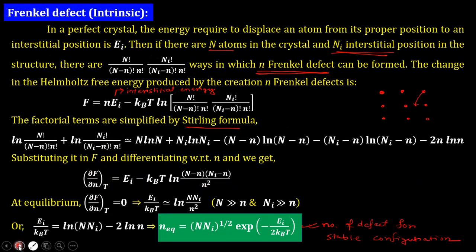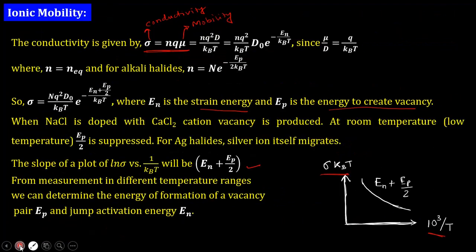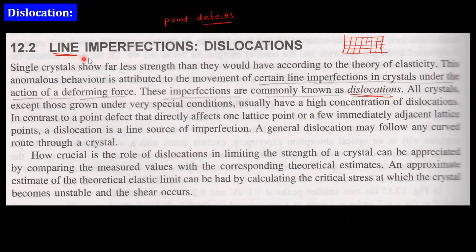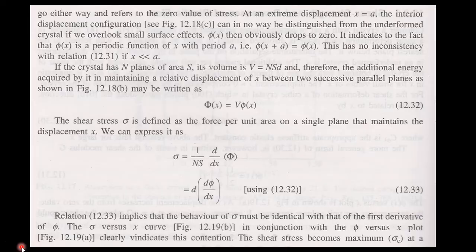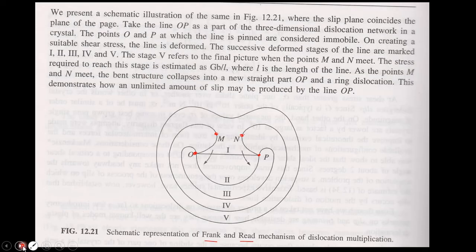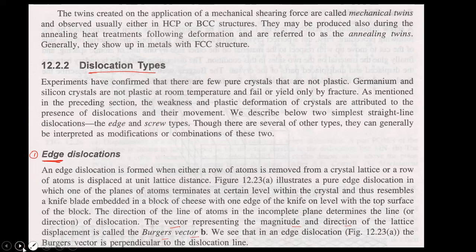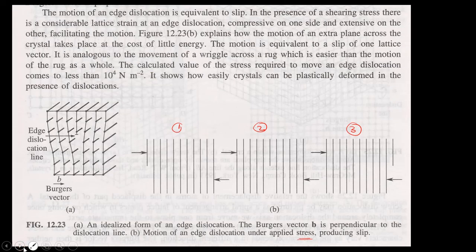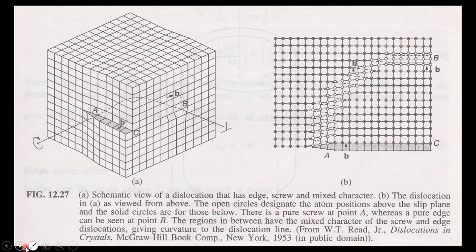For Schottky and Frenkel defect equilibrium calculations, including ionic concentration and ionic mobility, you can go through the provided material. For line defects, a line of atoms is missing, causing phenomena like strain fields. Slip and twinning relate to planar defects, and edge dislocation is a type of line defect that can arise in crystal structures.